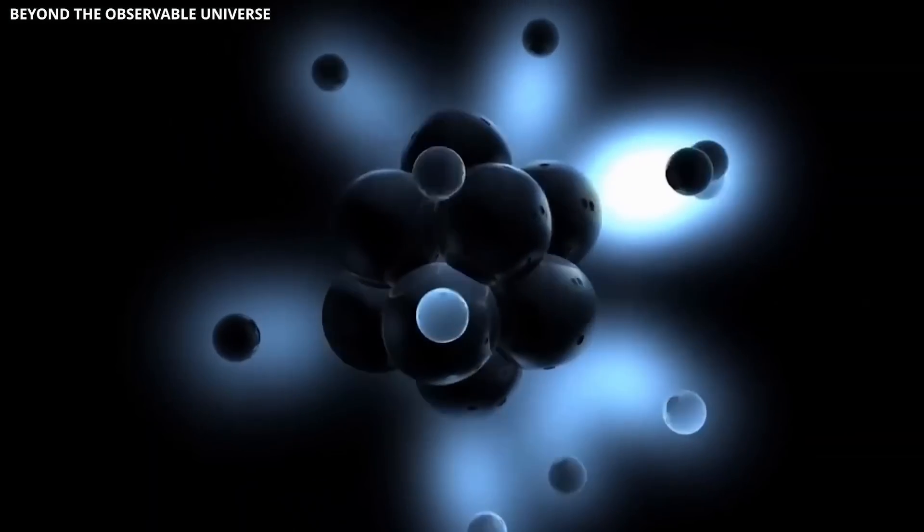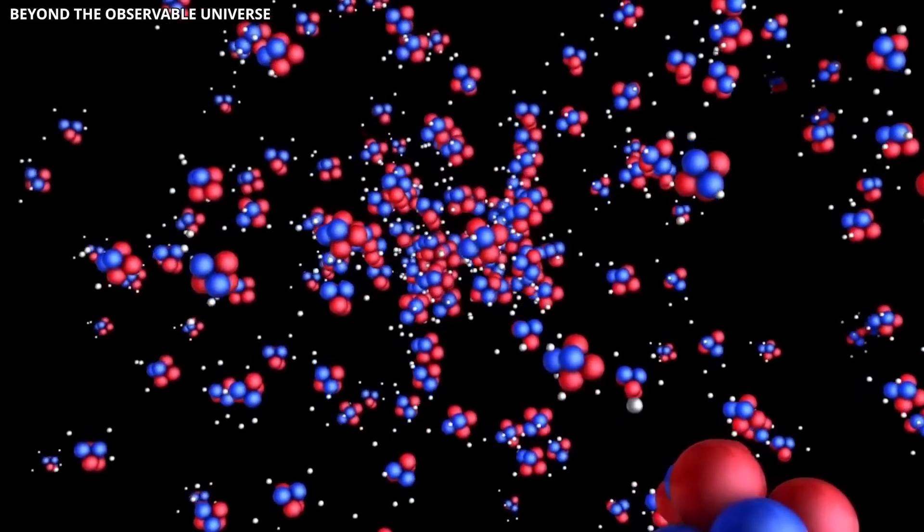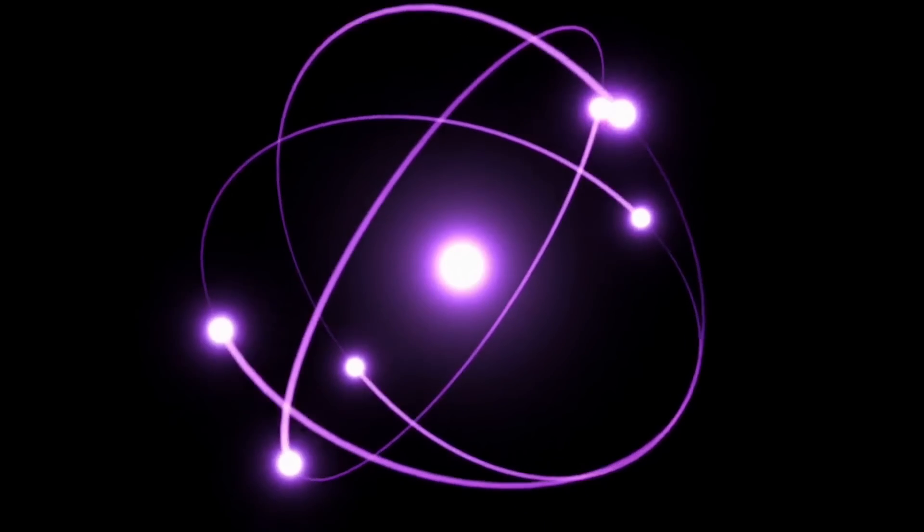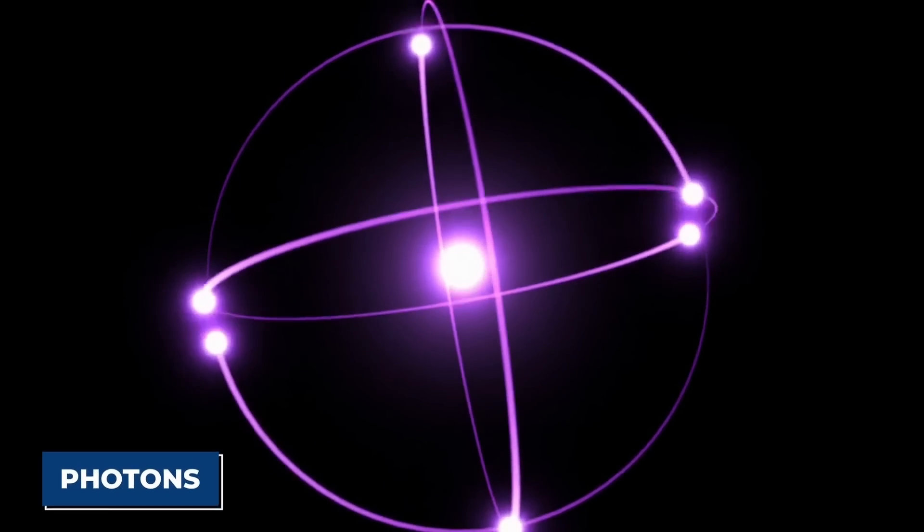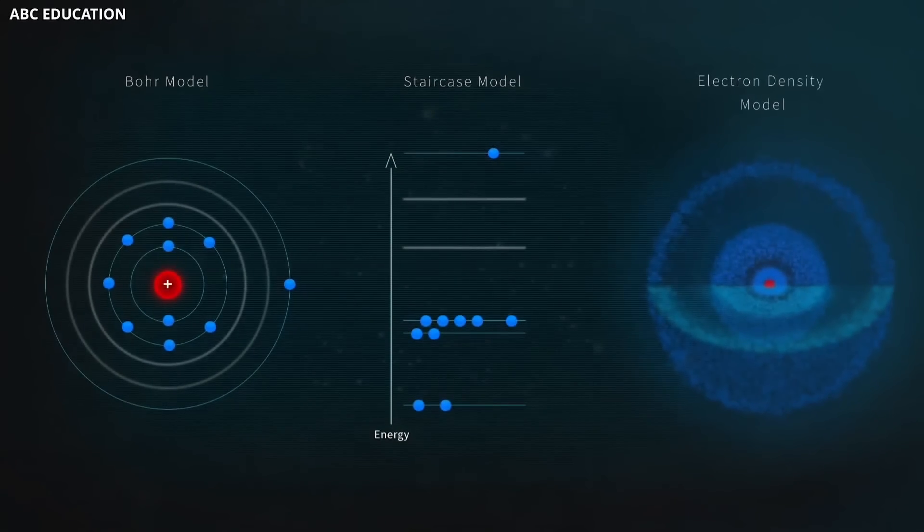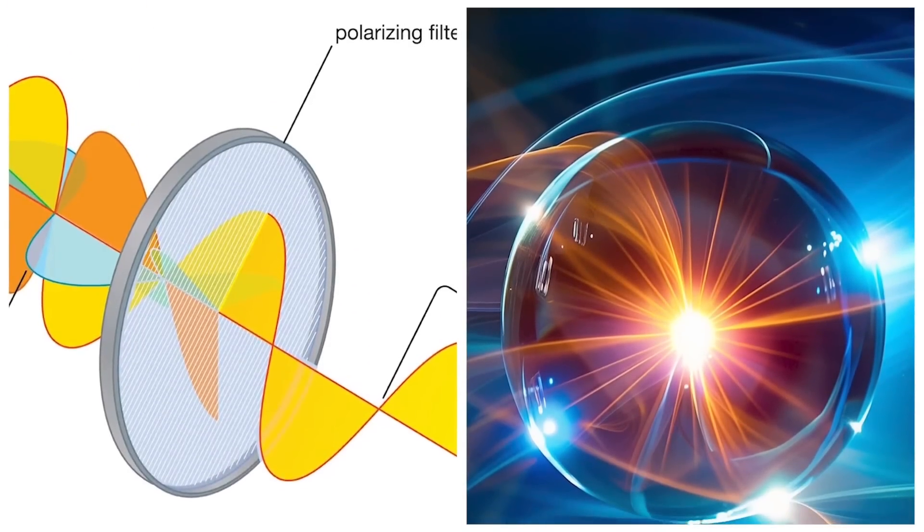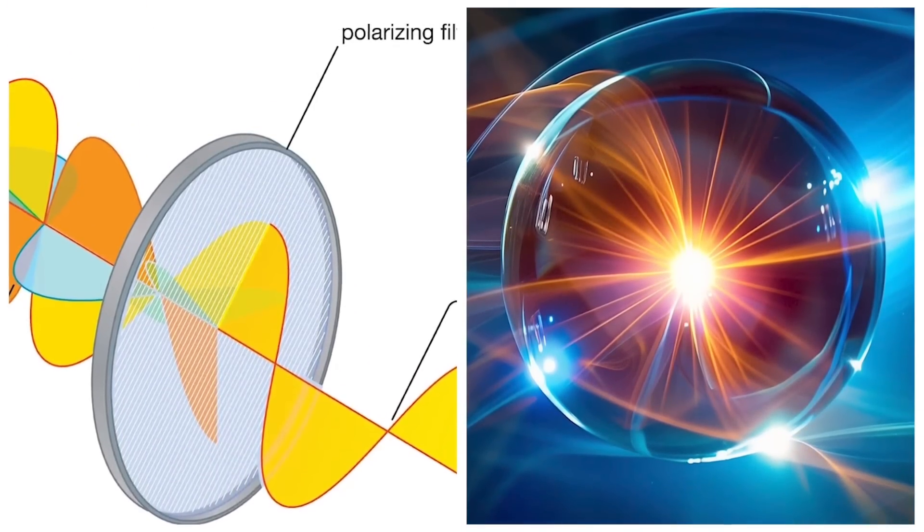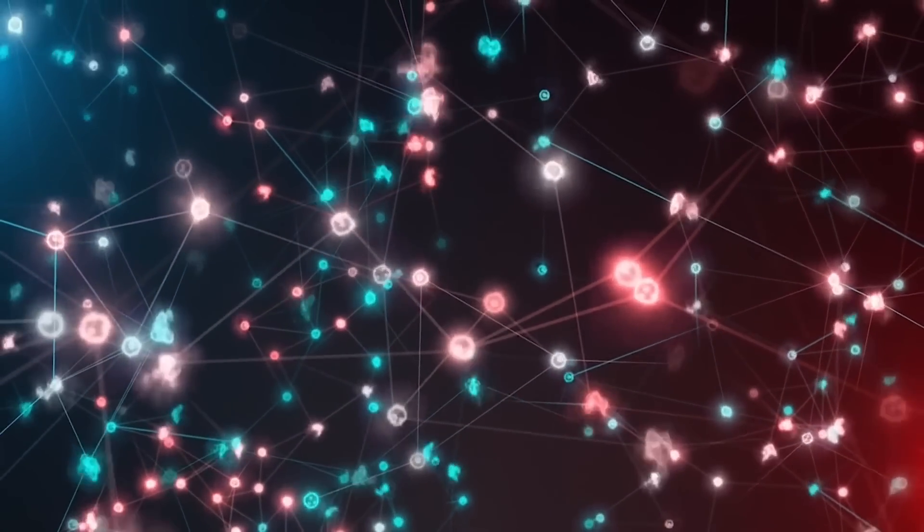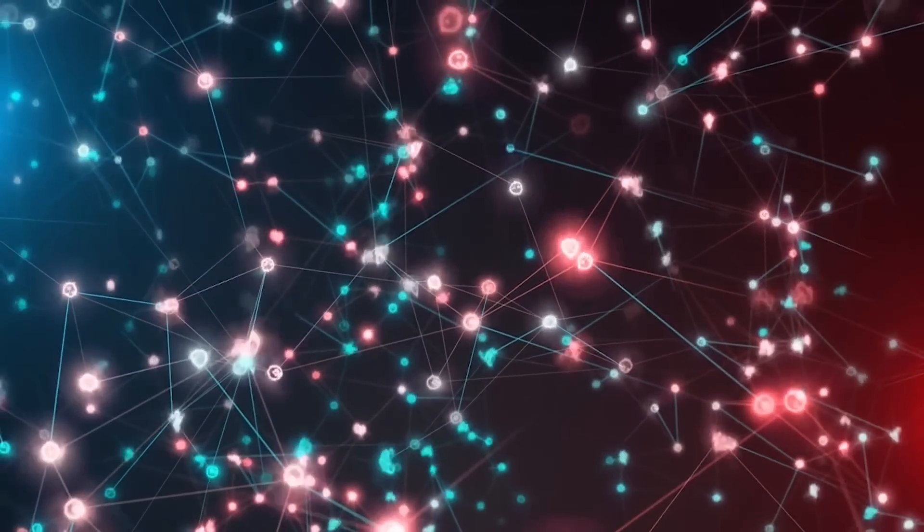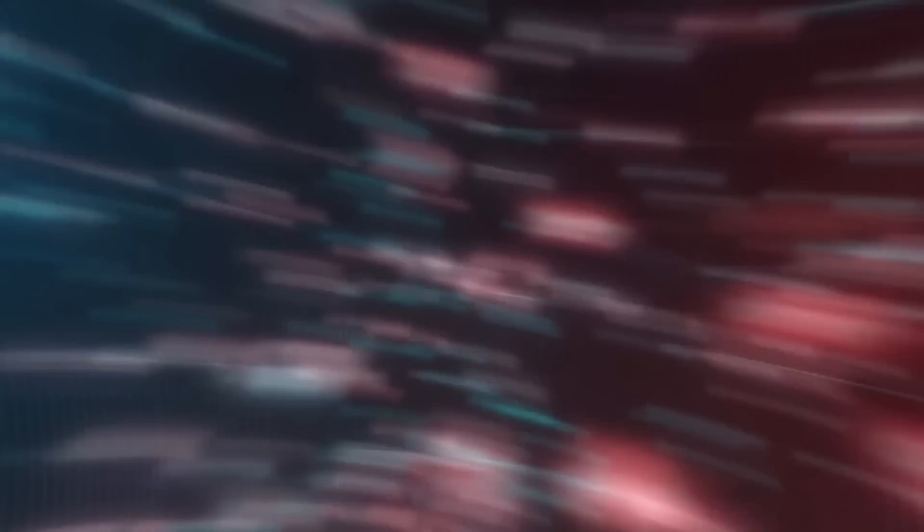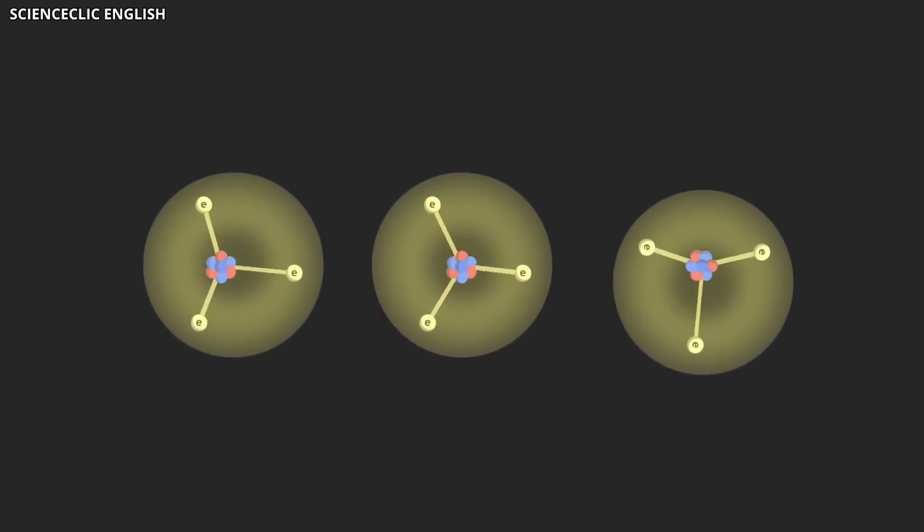Here's the point. Quantum communication leverages the unique properties of particles, like photons, to transmit information. In traditional communication, data is typically encoded in the wavelength, polarization, or number of photons. However, when you factor in quantum properties, the possibilities expand.